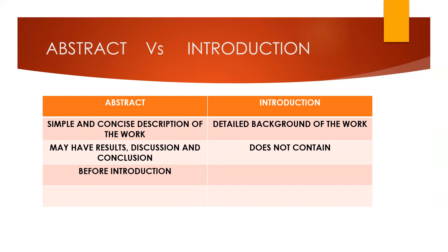The abstract in any research paper or research work comes before the introduction part, whereas the introduction comes after writing the abstract of a paper. One more point is that the abstract saves the time of the reader, such that one can go through the entire work in the simplest amount of time, as it highlights the important points or parts of an article or paper.